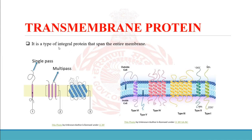Transmembrane proteins are a type of integral protein that span the entire membrane. They are of two types: single-pass and multi-pass. In single-pass, the protein completely spans the membrane one time. In multi-pass, the protein spans the membrane many times. There are many types of multi-pass configurations. In type 1, it is a single-pass protein inserted through the membrane; in type 2, the protein completely spans the membrane in the opposite orientation.